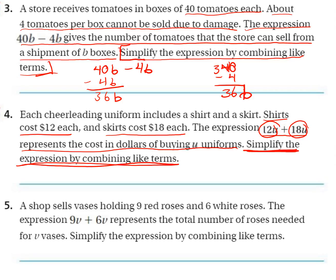They both have the same variable, U, and they both have the same exponent — they have no exponent, or we could say they have an exponent of 1. So they have the same variable, the same exponent. Essentially all we're doing is adding 12 and 18, but then just tacking on our U at the end. So 12 plus 18 is 30, and our new expression would be 30U.